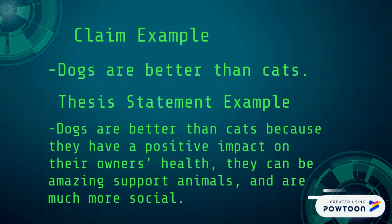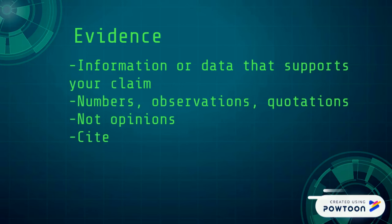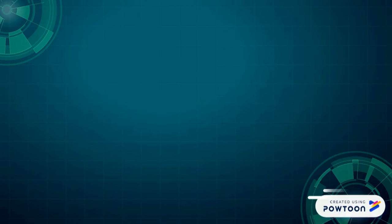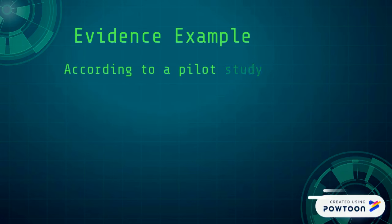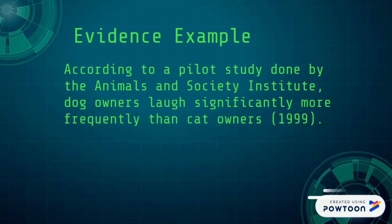Now that you've made that bold claim, you've got to back it up with evidence. Evidence is simply the information or data that supports your claim. It's usually numbers, observations, or — in my reading class — quotations from the text. It is not an opinion, and you have to cite it. So now that I've made my claim that dogs are better than cats, I've backed it up with a piece of data from a study. It's a fact, not an opinion, and I've cited it.